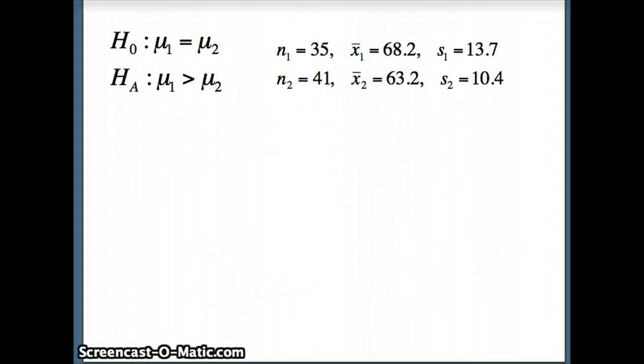So there's our numbers. There's our formula for the test statistic. x̄₁ 68.2 minus x̄₂ 63.2 divided by the square root of s₁² 13.7² over n₁ over 35 plus s₂² 10.4² over n₂ over 41.